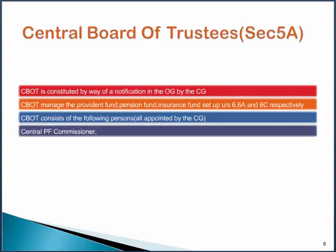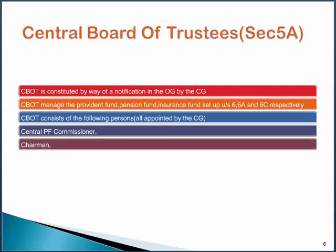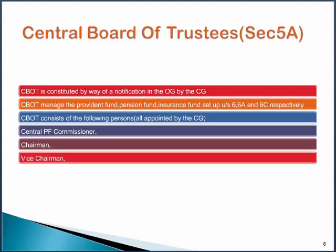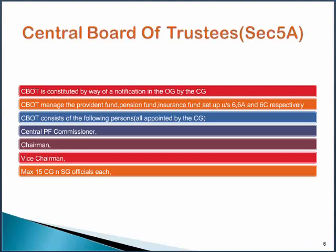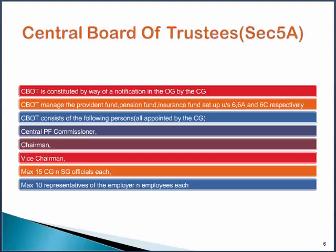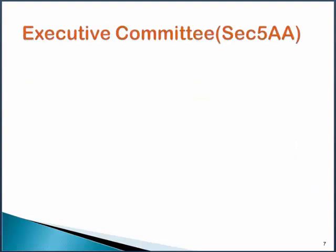The Central Board of Trustees will comprise of: firstly, the Central Provident Fund Commissioner; the Chairman; Vice Chairman; maximum 15 Central Government and State Government Officials; and finally, maximum 10 representatives of the employer and employees each.